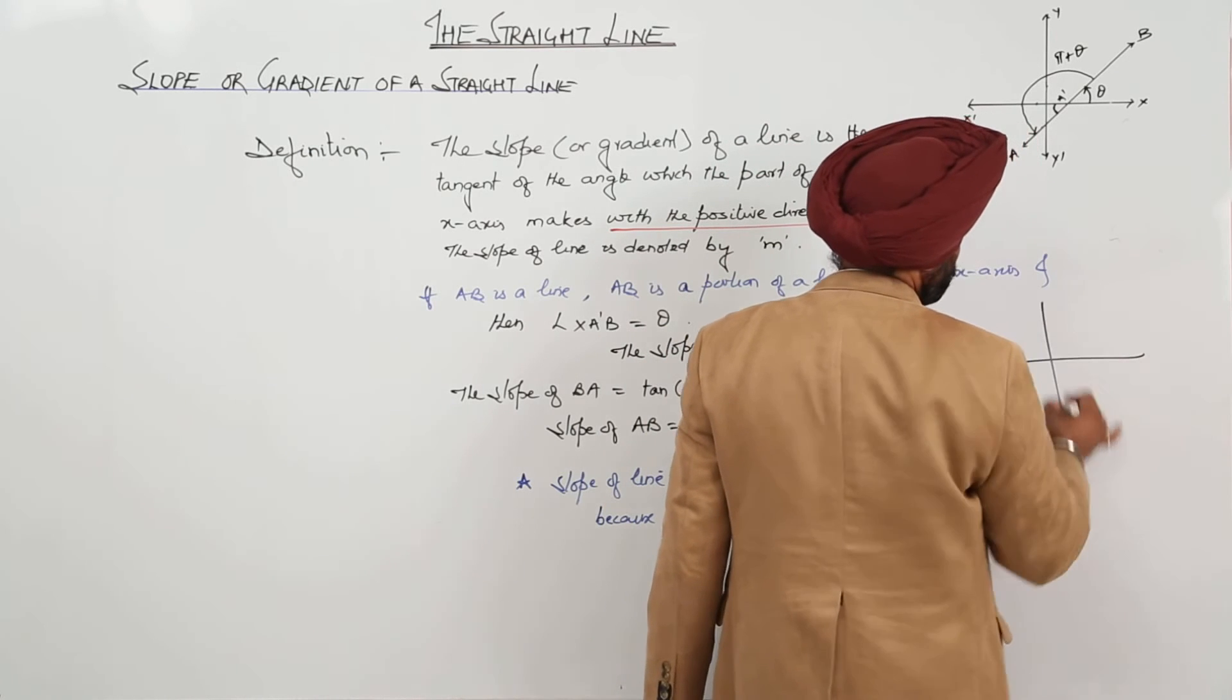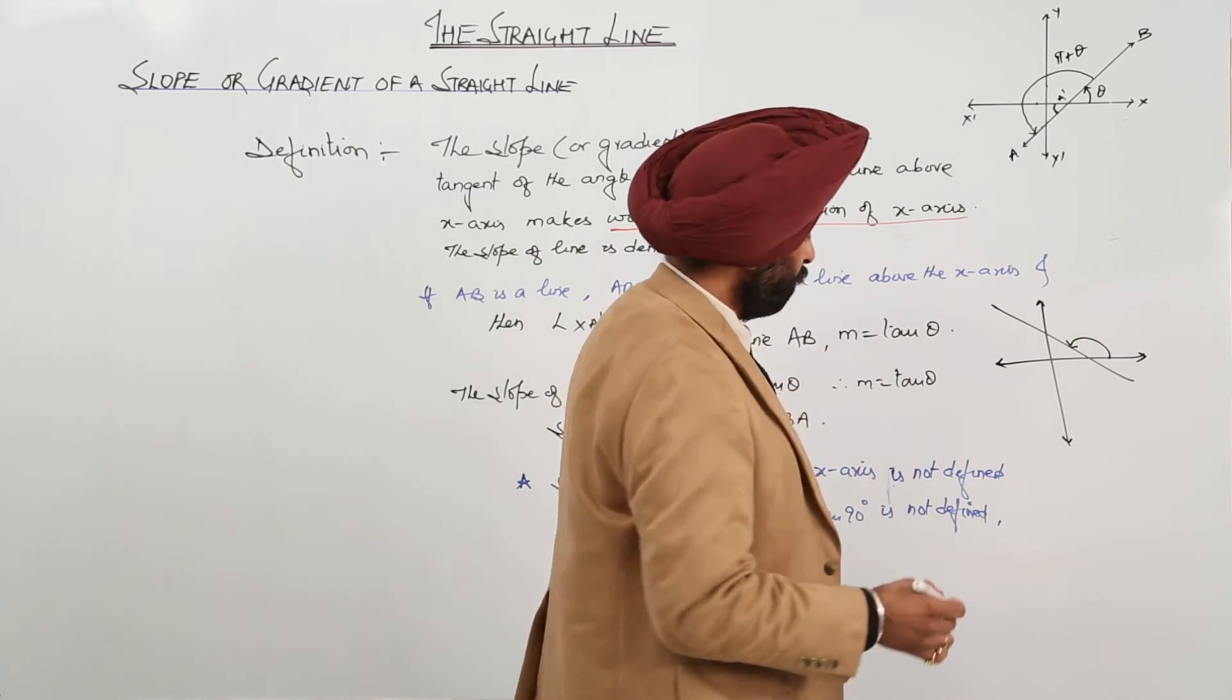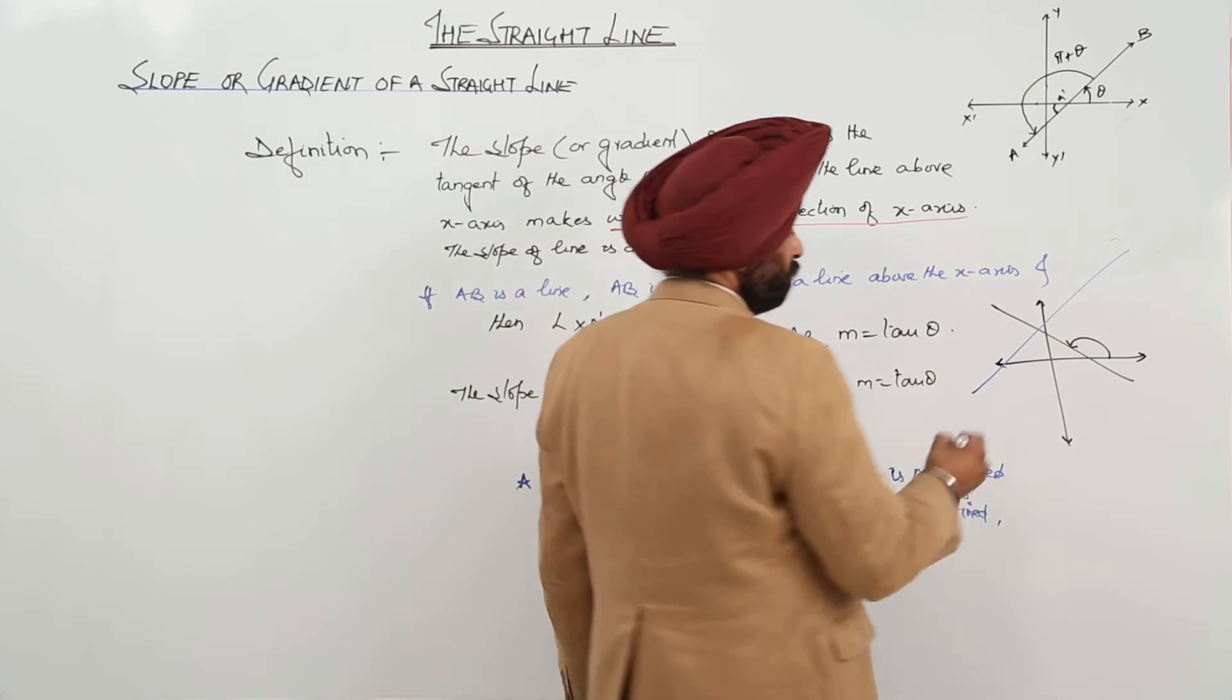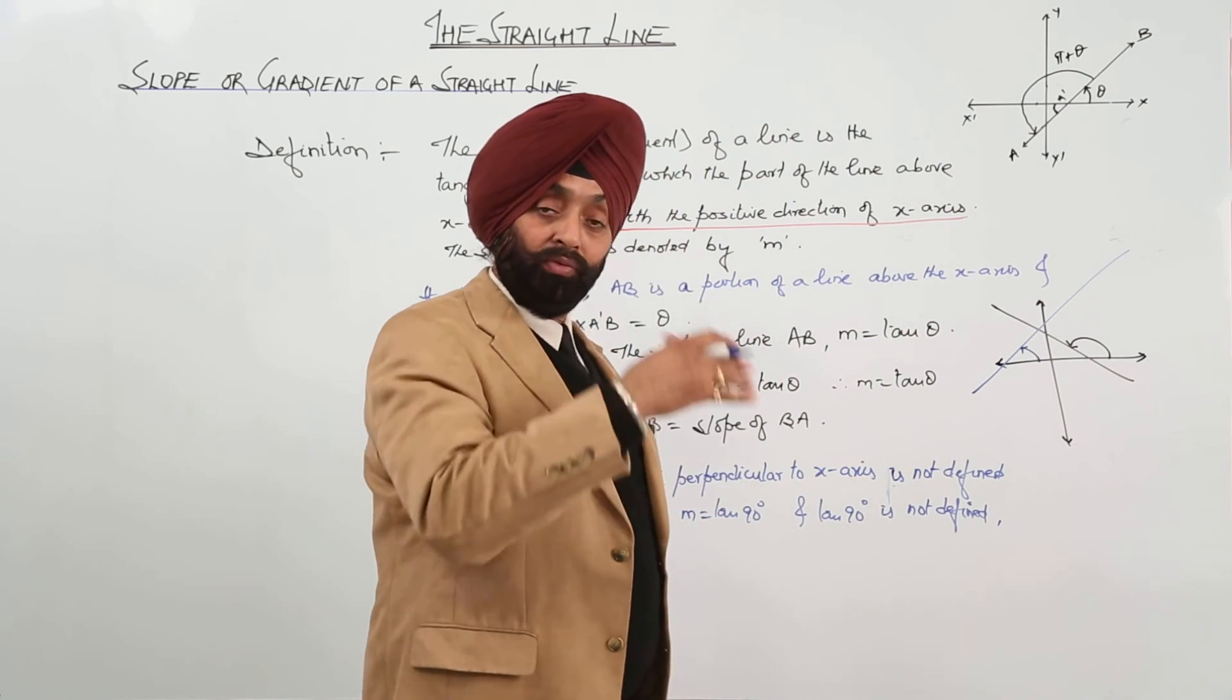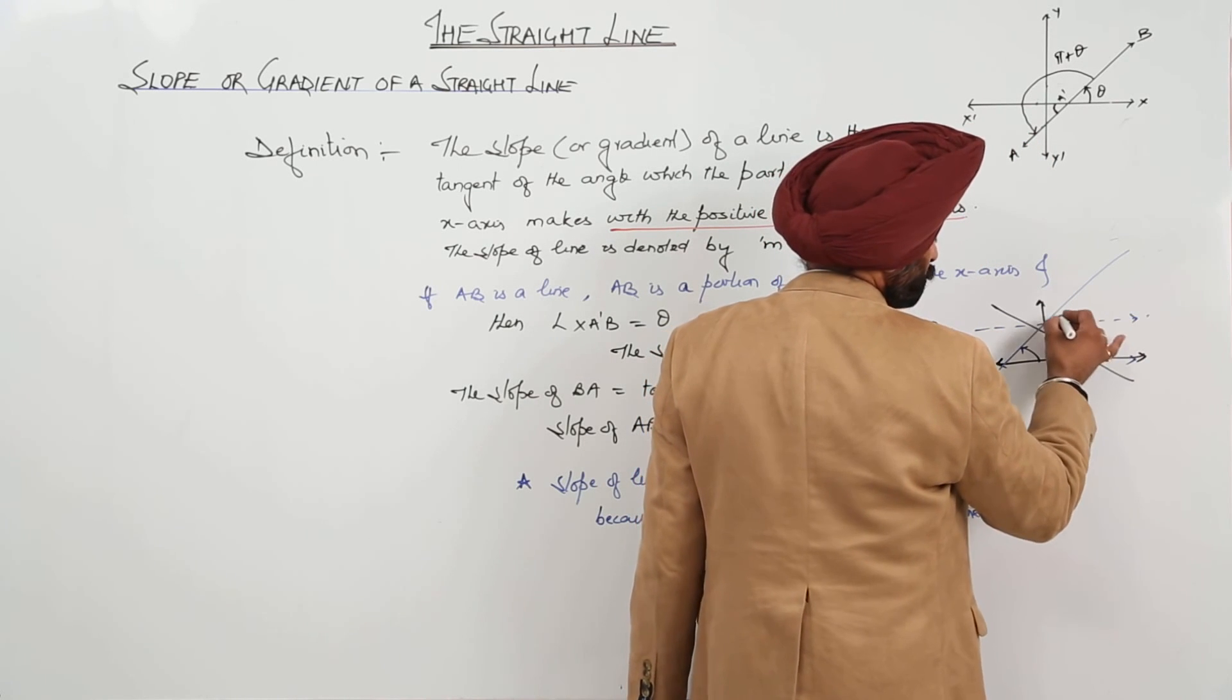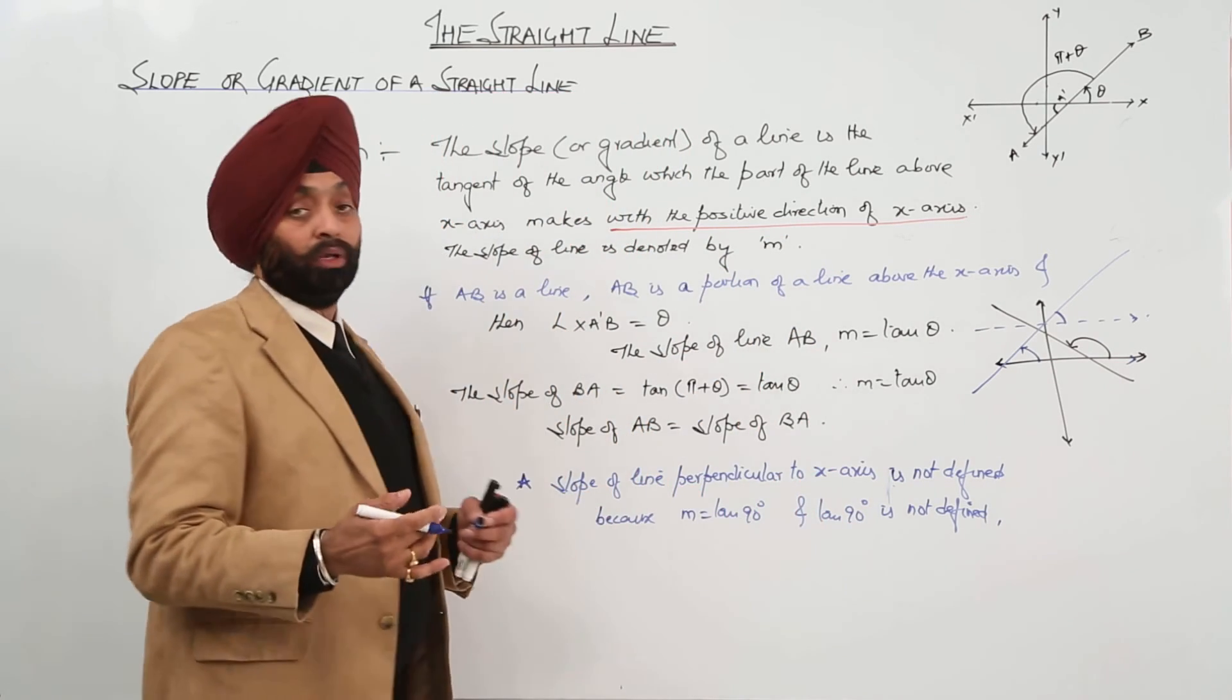Now, just look here. We are having one line like this one. So, its slope will be this one. Another line, suppose we are having this one. So, its slope will be which one? This one. You can move to this side. Or, if you want to be in the positive side only, you can just draw a straight line here. This line is parallel to this line. So, it means this angle is the slope. So, slope will always be from the positive side. So, this was all about the slope.